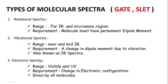Electronic spectra lie in the visible and UV range. The requirement is that there must be some change in electronic configuration, and this type of spectra is given by all molecules. This information is very helpful for GATE and SLATE exams.